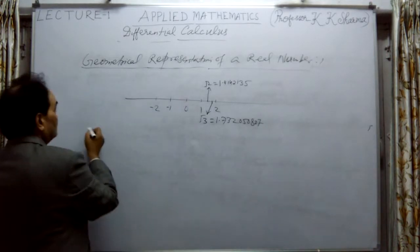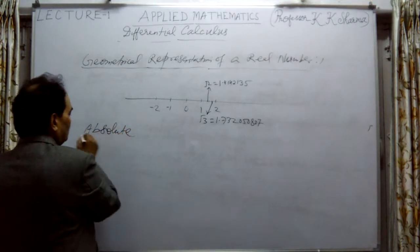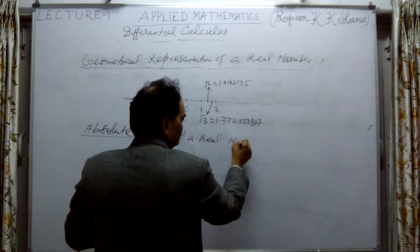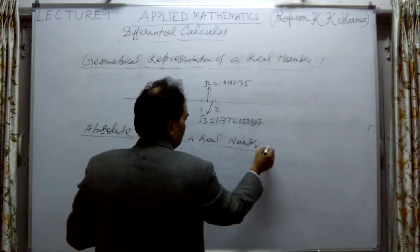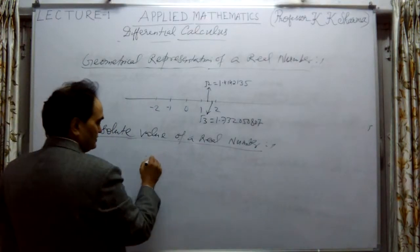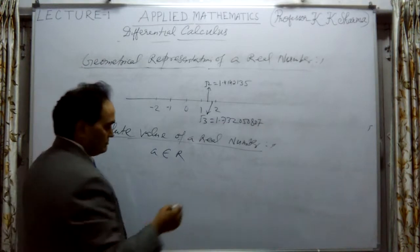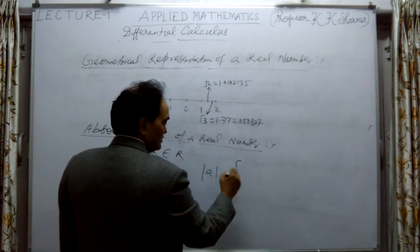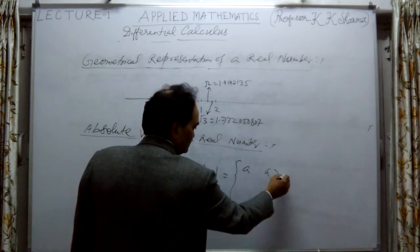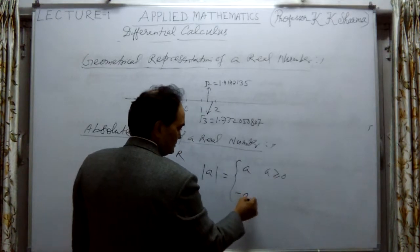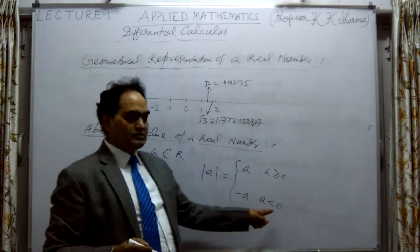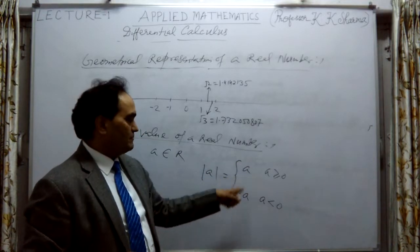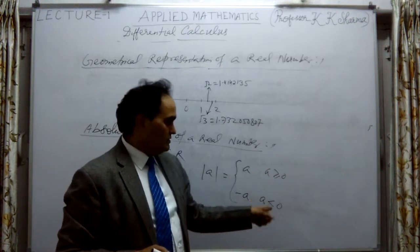The next point is the absolute value of a real number. If A belongs to R, the absolute value of A is represented as |A|, which equals +A if A ≥ 0, and equals -A if A < 0. So the absolute value is always positive or zero.